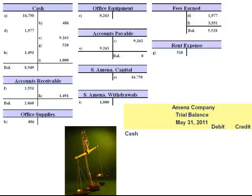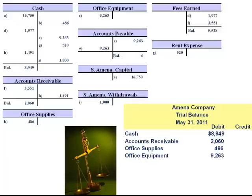We then list the assets in order of liquidity. Cash, accounts receivable, office supplies, and office equipment are all assets with normal debit balances.